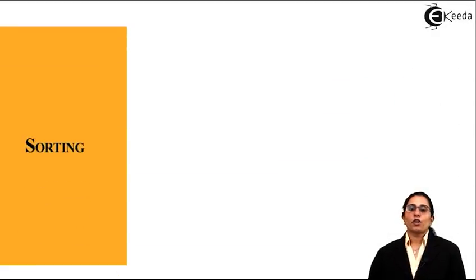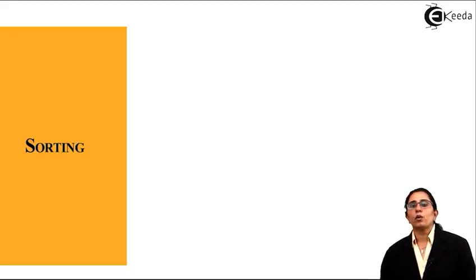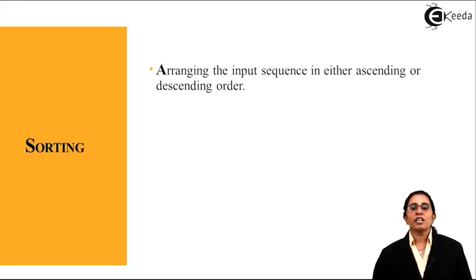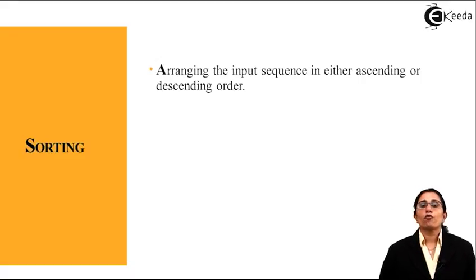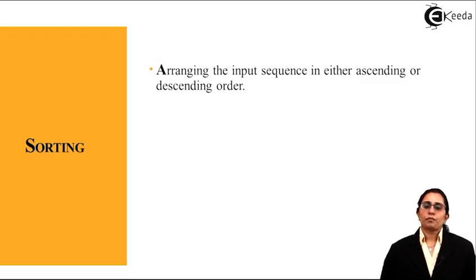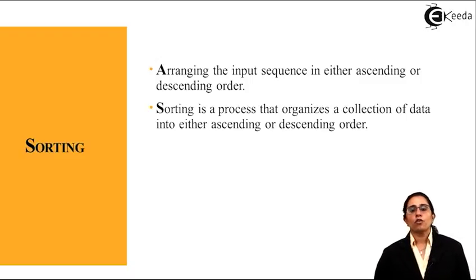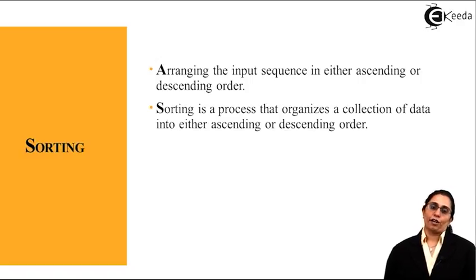What is sorting? In simple terms, any sorting method in the real world is arranging the input sequence in either ascending or descending order — that is, from a larger to smaller value or from a smaller to larger value. Sorting is also defined as a process that organizes a collection of data into either ascending or descending order.